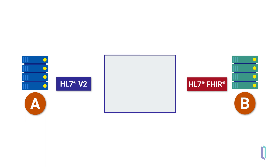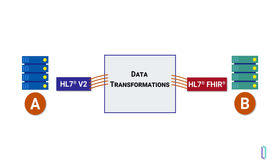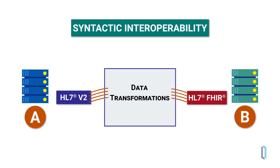A tried and true solution for this problem is to have an intermediary system that transforms data from one format to another, such as from HL7v2 format into the FHIR format via data transformations. By creating such a mapping, we achieve syntactic interoperability — that is, the two systems have a standardized way of exchanging data.